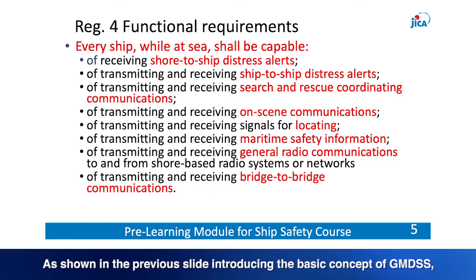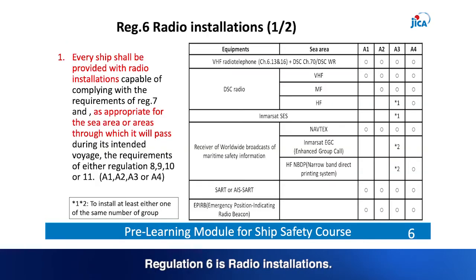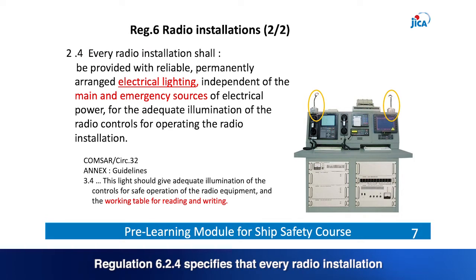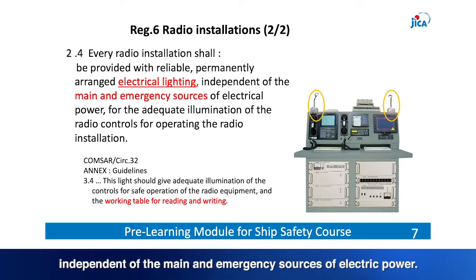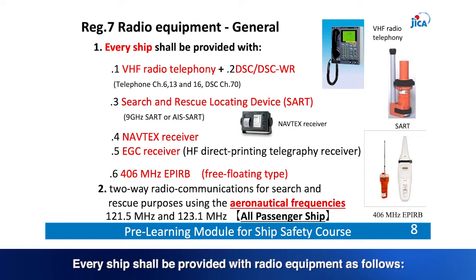As shown in the previous slide introducing the basic concept of GMDSS, Regulation 4 enumerates the functional requirements of GMDSS. Every ship, while at sea, shall have these capabilities. Regulation 6 covers radio installations — every ship shall be provided with radio installations appropriate for individual service areas. Regulation 6.2.4 specifies that every radio installation must be provided with electrical lighting independent of the main and emergency sources of electric power. Regulation 7 prescribes the minimum requirements for radio equipment.